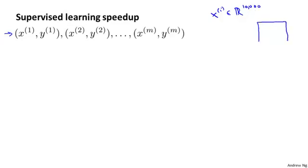Let's say that your examples xi are very high dimensional. So xi are 10,000 dimensional feature vectors. One example would be if you were doing some computer vision problem where you have 100 by 100 images. That's 10,000 pixels.